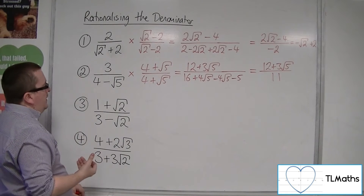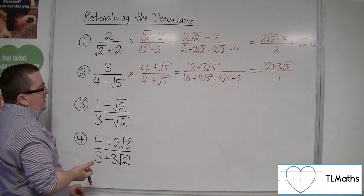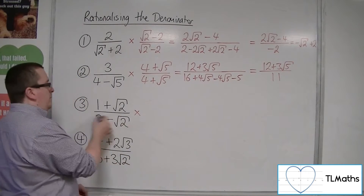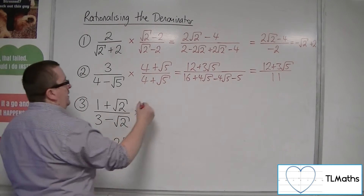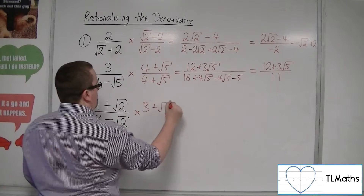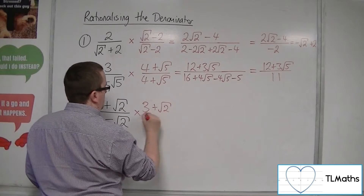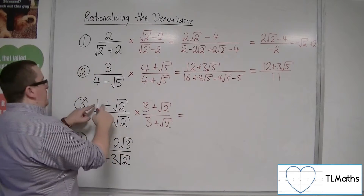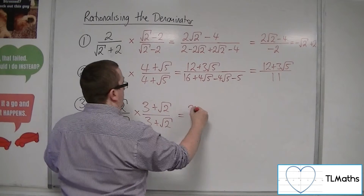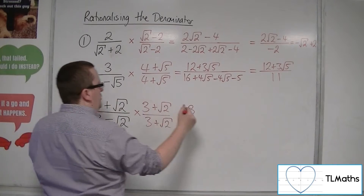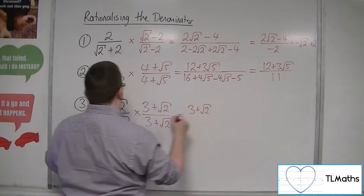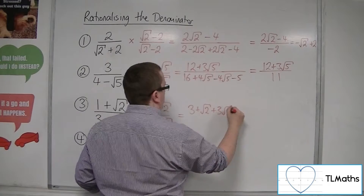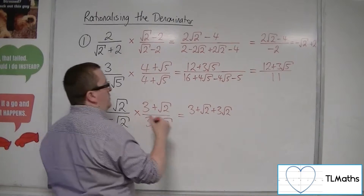Number 3 — we've now got a root in the numerator as well, but we're still looking at the denominator. So we multiply top and bottom by 3 plus root 2. We expand: 1 times 3, then 1 times root 2, then 3 times root 2, and root 2 times root 2.